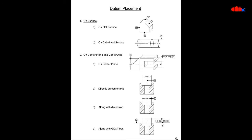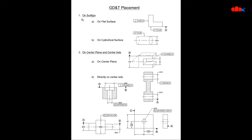GD&T placement also works on surface or on center. On a surface, you apply the GD&T box directly to the surface. On center, you can apply it to a center plane or a center axis. For example, a perpendicularity GD&T box attached to a dimension tells you that the center axis must be perpendicular — 90 degrees to datum A — and its deviation must be within the stated range. These are the two ways to place datums and GD&T inside a drawing.